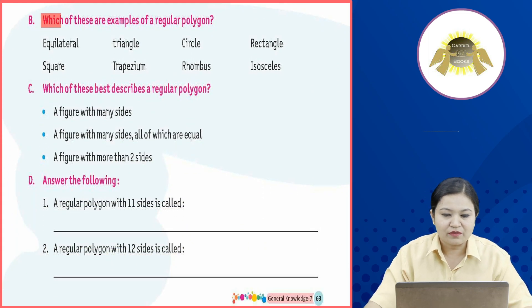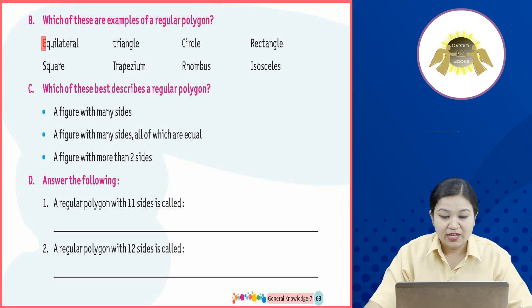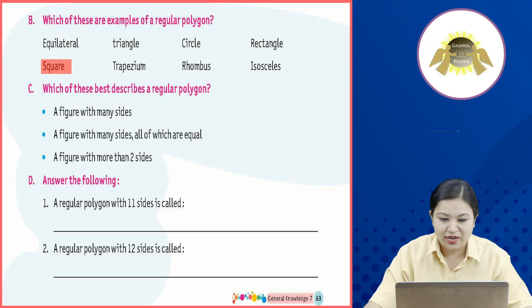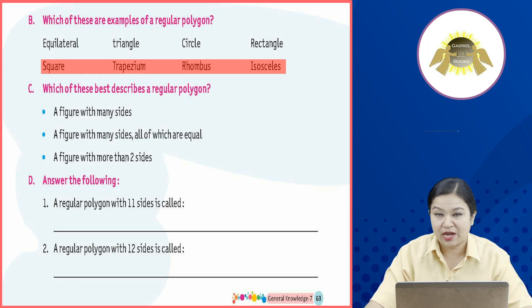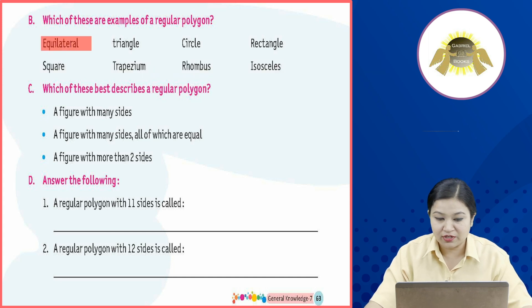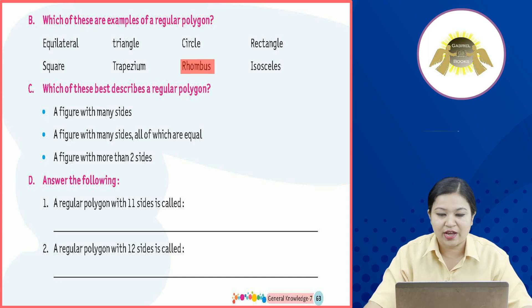Part B: Which of these are examples of a regular polygon? Options given are equilateral triangle, square, trapezium, rhombus, and isosceles. The question asks which are examples of regular polygons. The answer is equilateral triangle, square, and rhombus — these are the regular polygon examples.